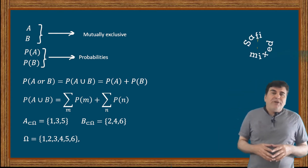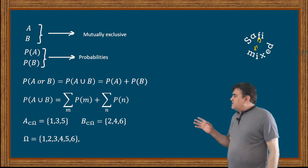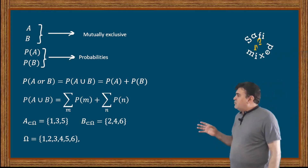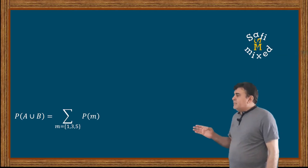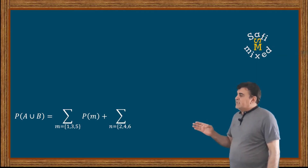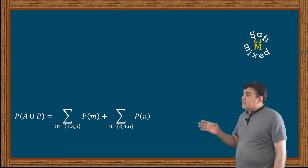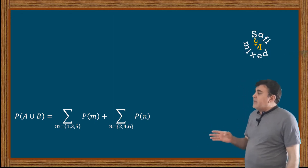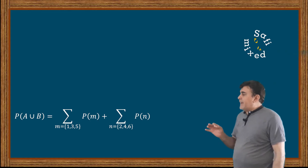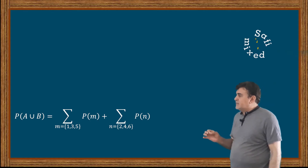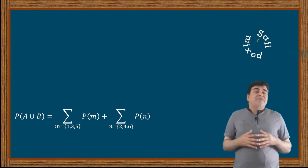Then the joint probability of events A and B — that is, P(A ∪ B) — equals Σ over m = {1, 3, 5} of P(m), plus Σ over n = {2, 4, 6} of P(n).